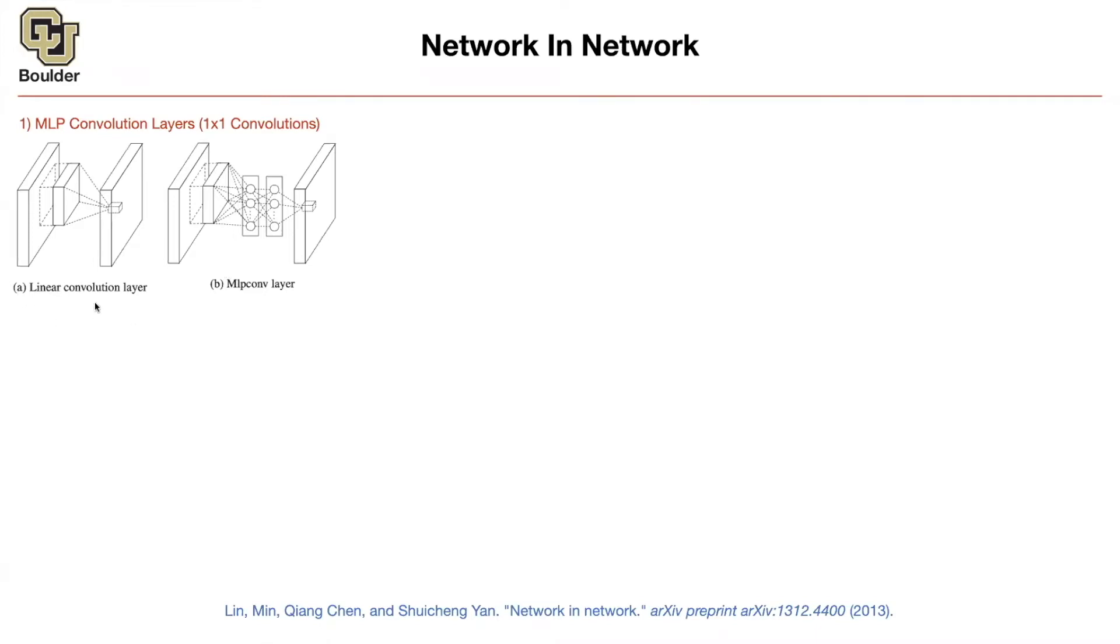So they started with a linear convolution layer, which is basically you have a filter, you dot product it with that portion of your image, or that portion of your input. And then in the end, you're going to get a neuron here, sitting here. That's a linear convolution.